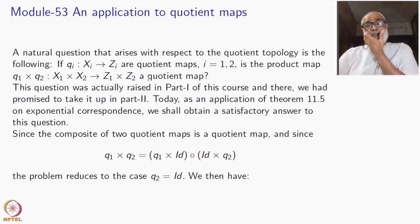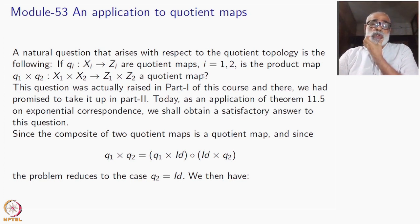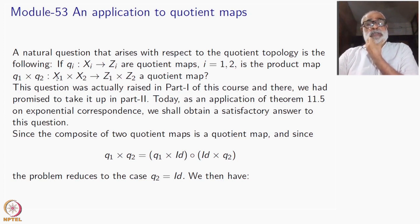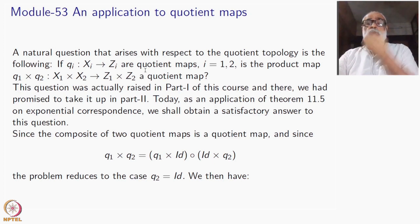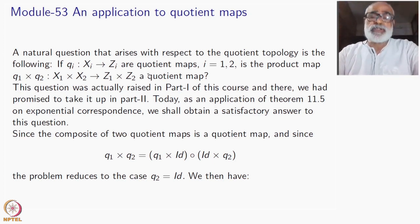You may be surprised that in general this is not true. Surjectivity will still be there, continuity is still there. If q_1 and q_2 are open maps, the product is also an open map. But in general, not all quotient maps are open maps, so we have to study other quotient maps.